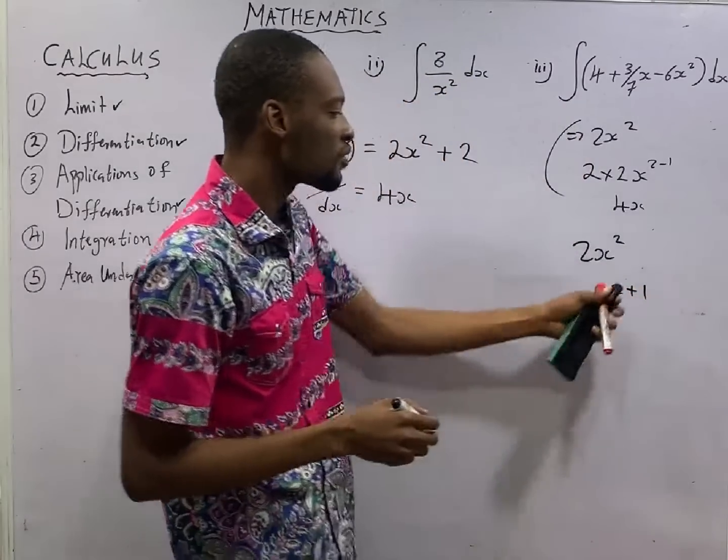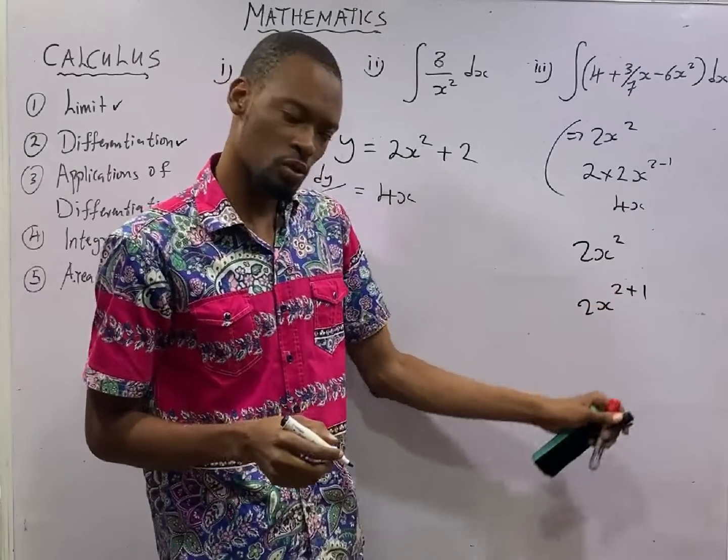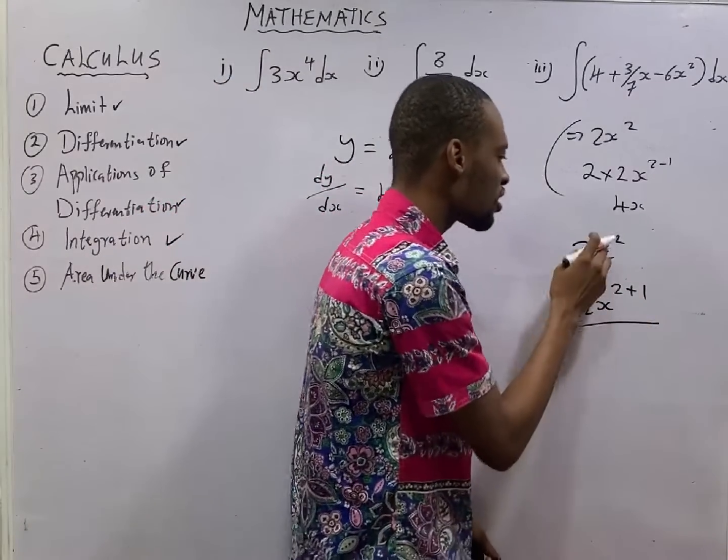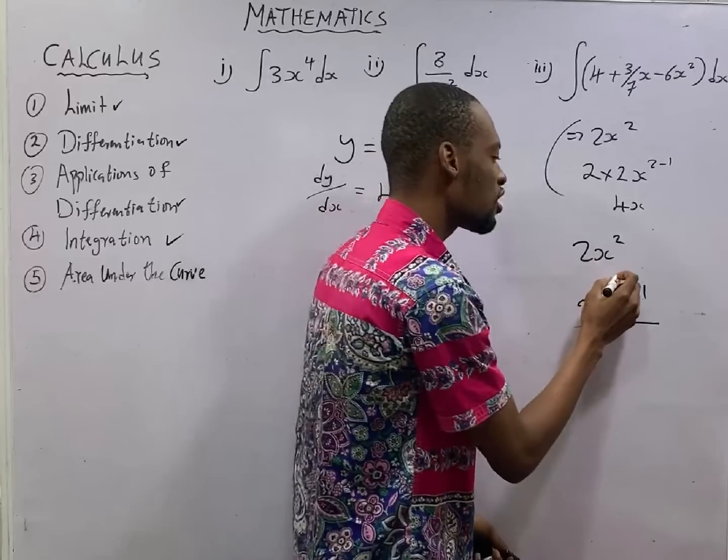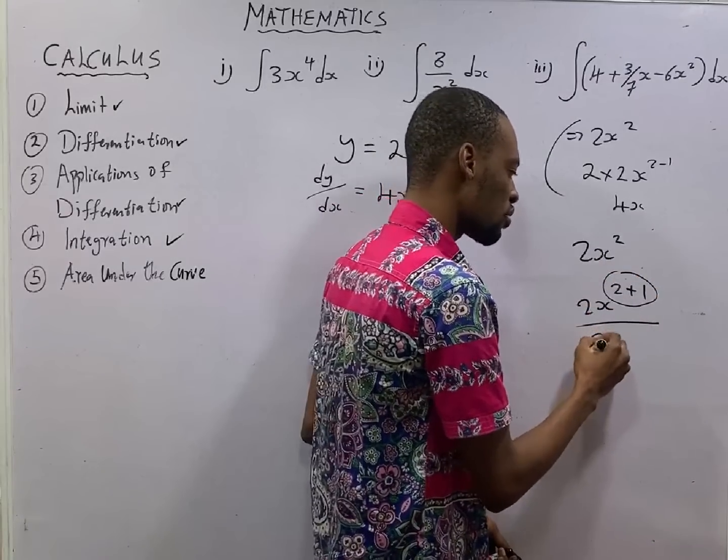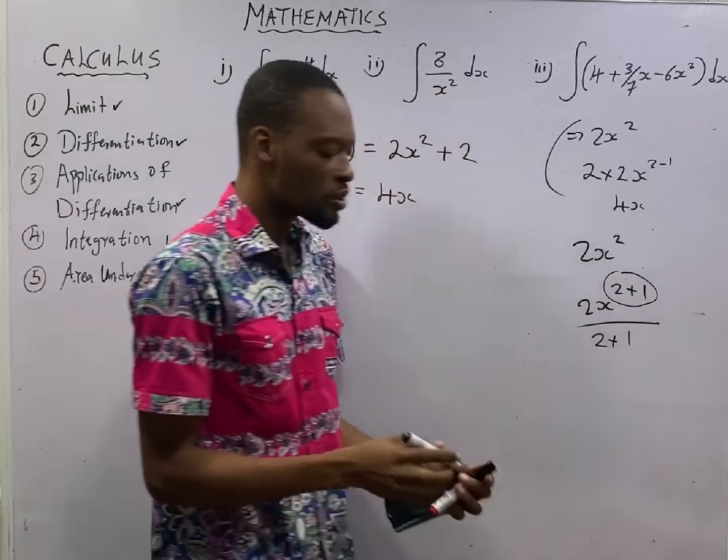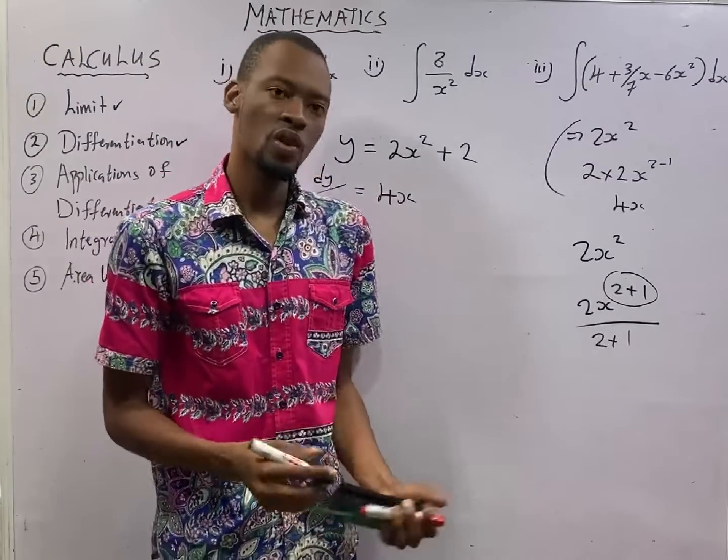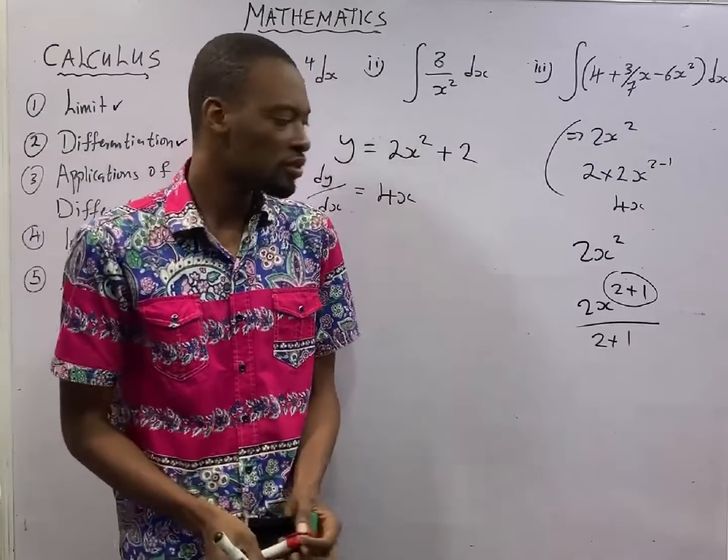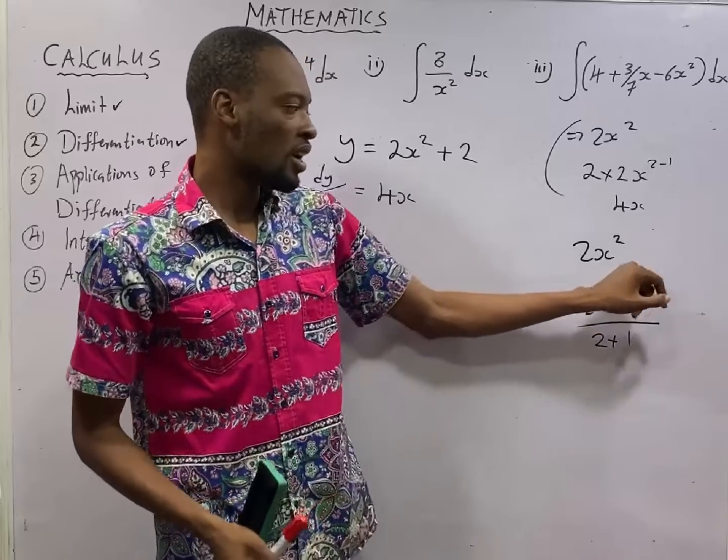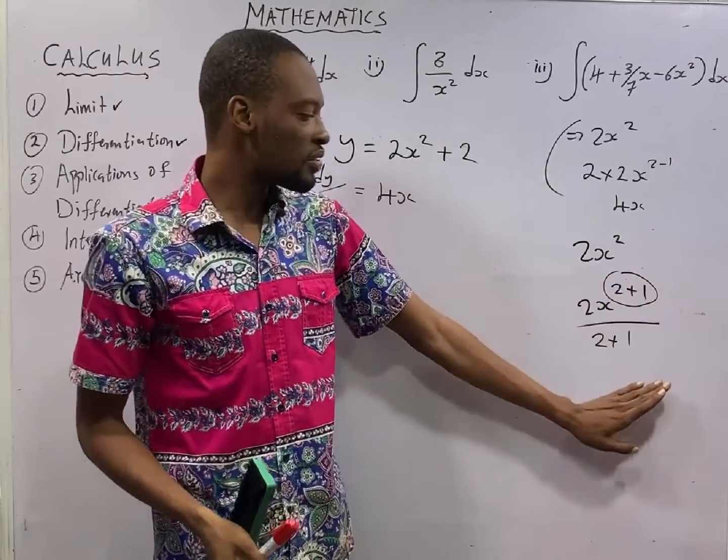Plus 1. So, instead of 2 minus 1, it is 2 plus 1. Instead of saying 2 times 2, no. Use this power to divide. You get 2 plus 1. So, for integration of simple algebraic function, you add 1 to the power. Then you divide by the power.